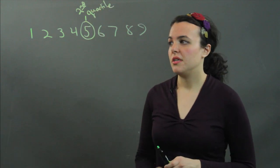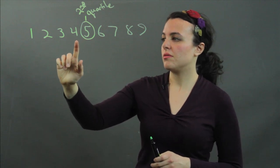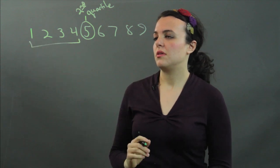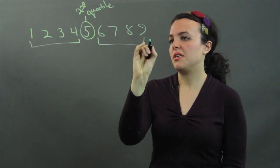The lower quartile is the first one. So it is the number that is the median for this set of numbers. The upper quartile is the median of this set of numbers.